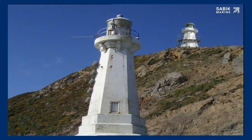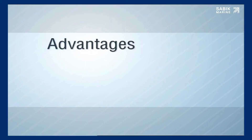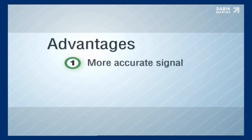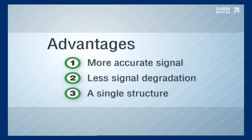A Pell light is most commonly used as an alternative to a two-station leading or alignment light system. The main advantages are: firstly, a more accurate signal is provided, especially when viewed from a long distance; secondly, the signal is less likely to degrade in bad weather because there is no rear light; and thirdly, only a single structure is required.